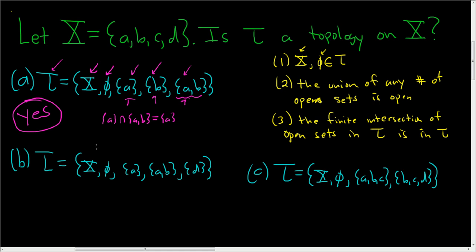So the first condition, also satisfied. What about the second one? Is there some union we can take that does not live inside tau? Well, I'm thinking, yeah, the one I just underlined.